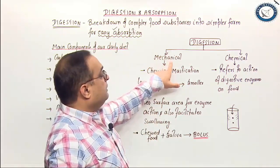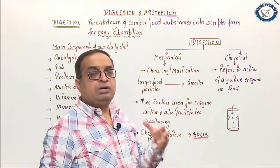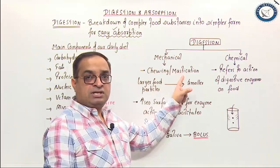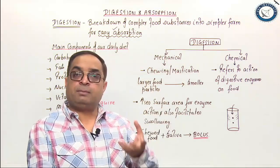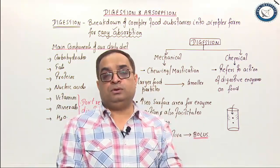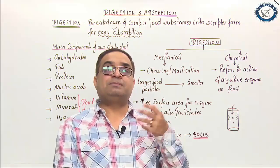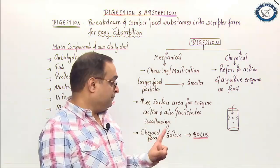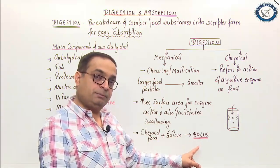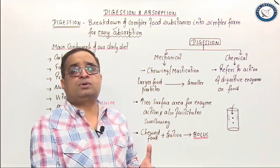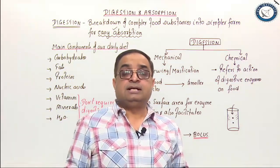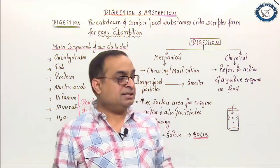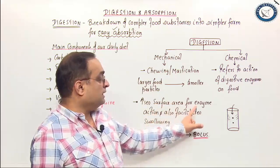Digestion can be mechanical or chemical. Mechanical digestion refers to chewing or mastication — you place food in your buccal cavity and chew it with your teeth. The food gets mixed with saliva and that is called bolus. Chewed food plus saliva equals bolus. When you chew food, the larger food particles are broken into smaller pieces, which increases the surface area for enzyme action.